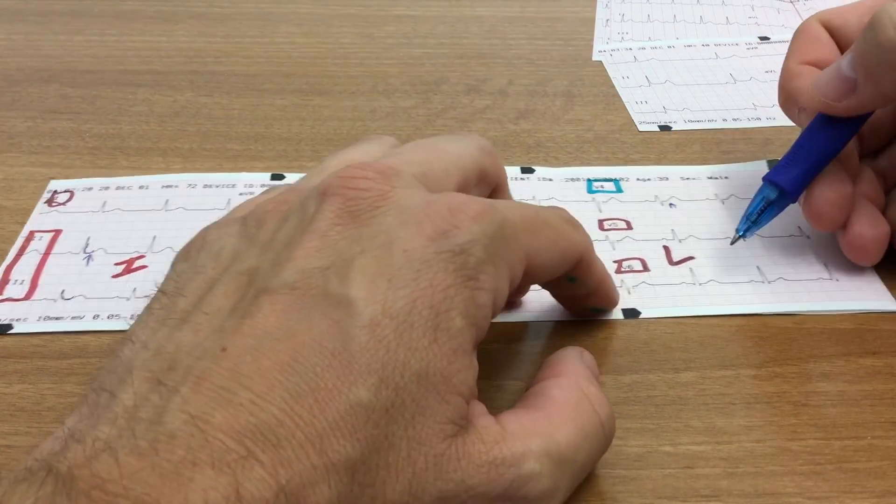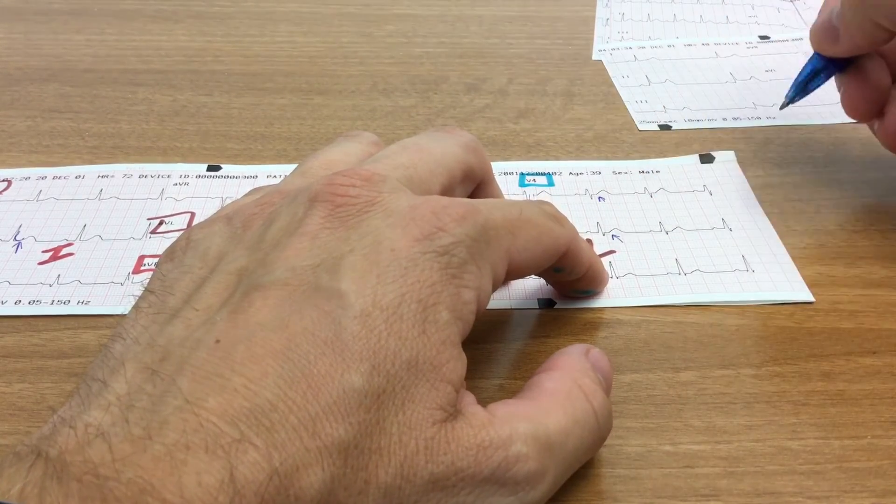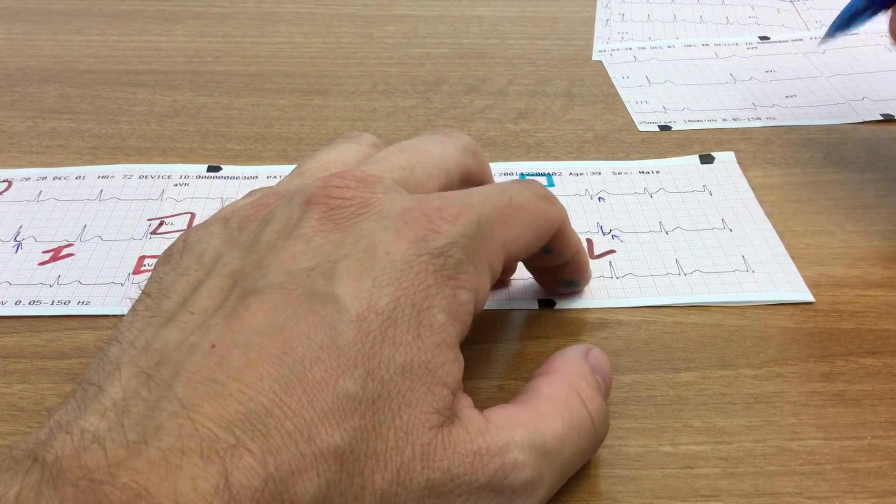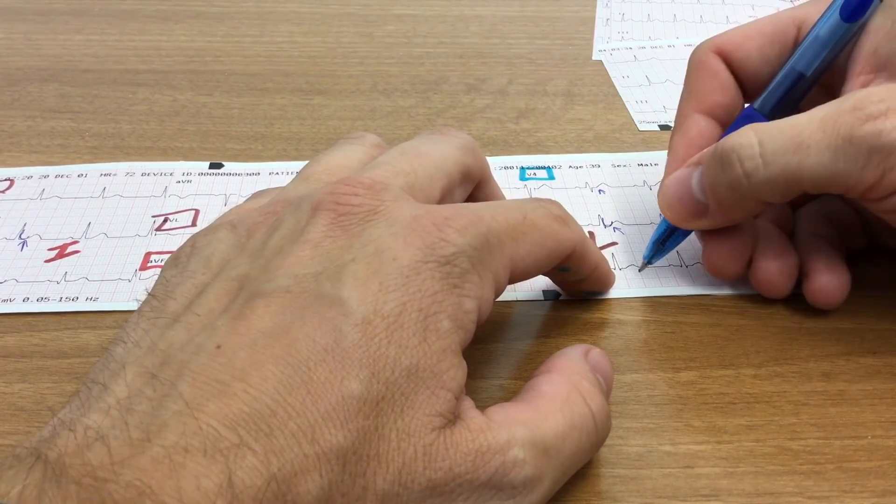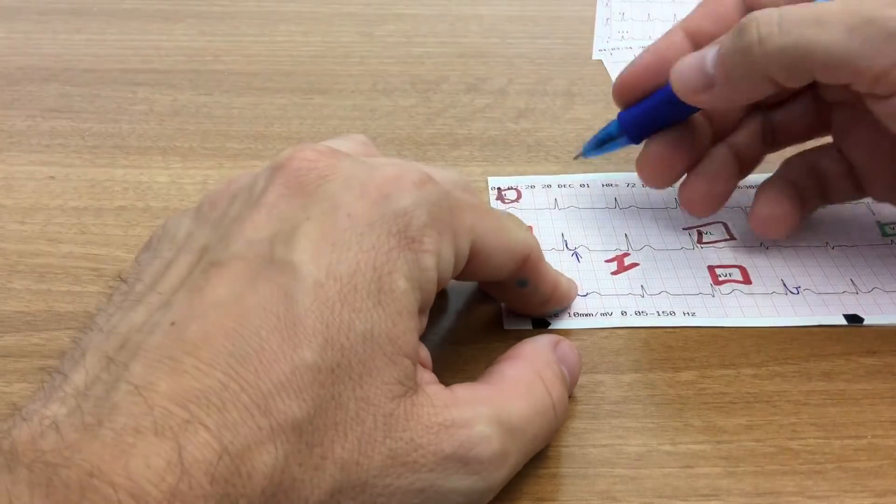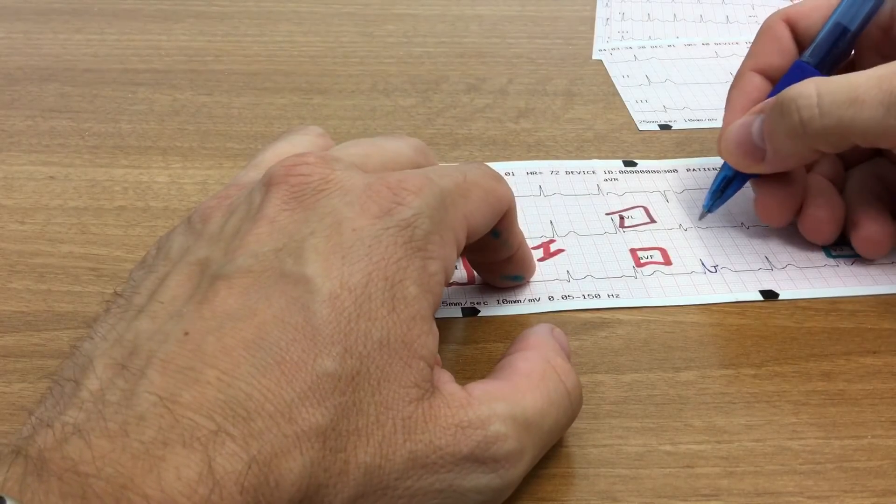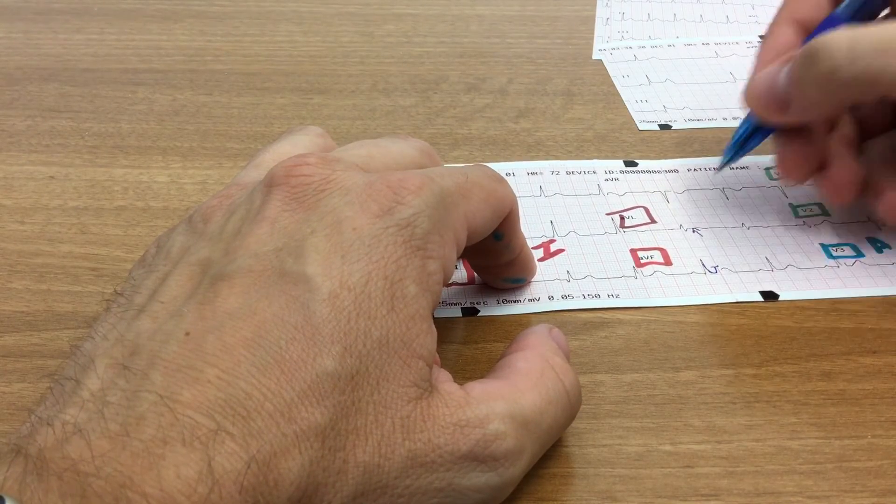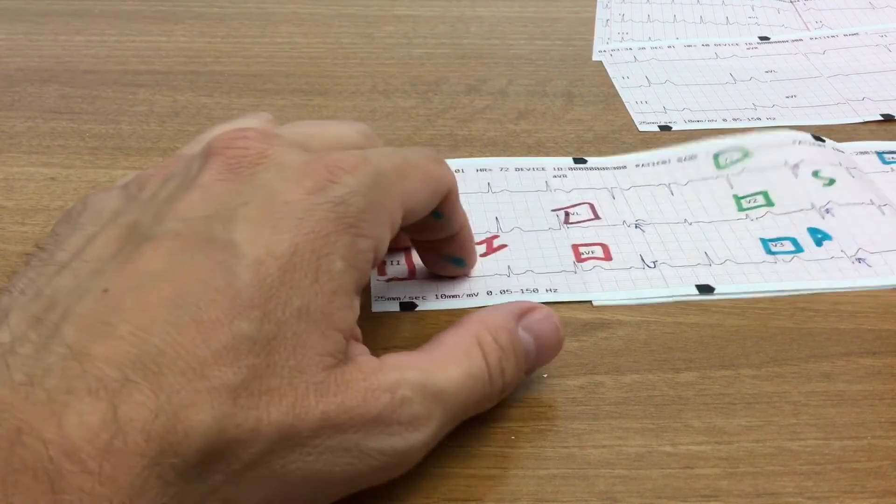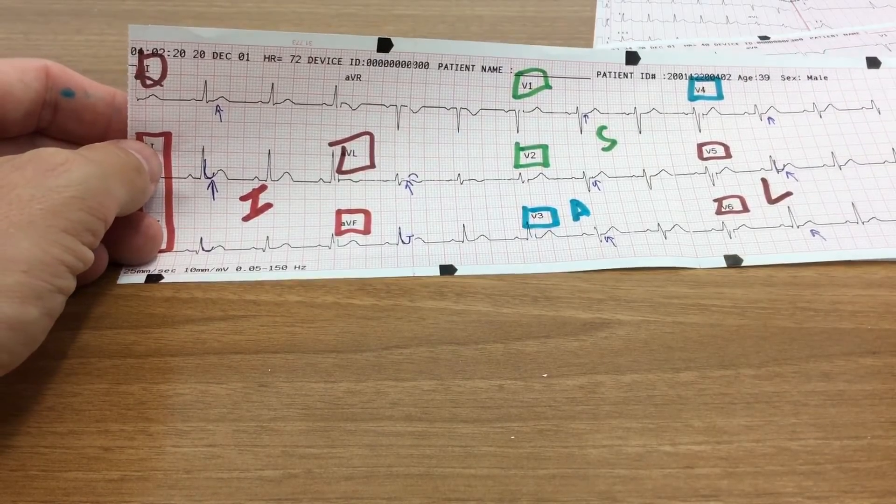And then finally, we'll move on to the lateral wall. Okay, so V5. Again, you can see that I have my J point. Good return to baseline there. Okay, so the ST segment checks out there. V6, the same thing. Moving on to 1, the same thing there. And then AVL. Again, you have a baseline and then your T wave. And so the J point checks out there as well.